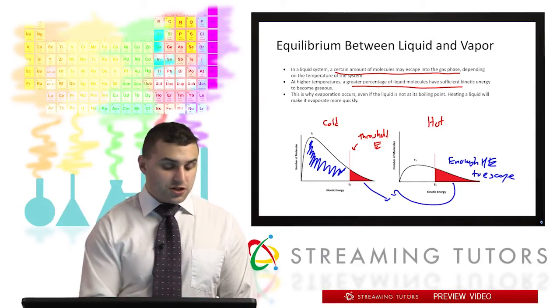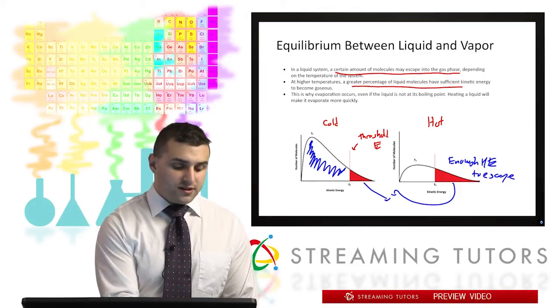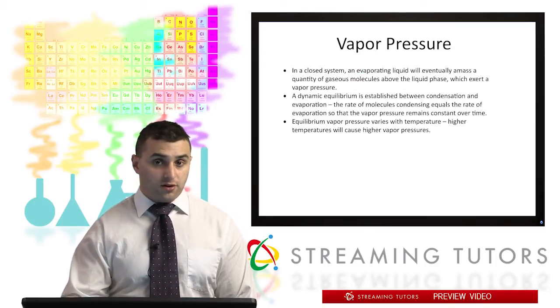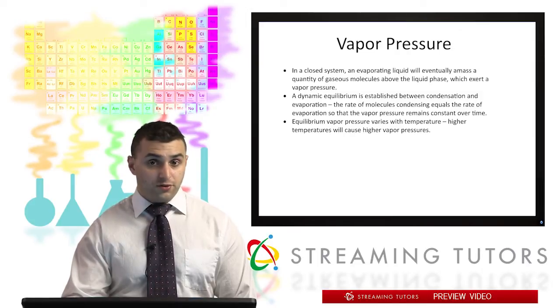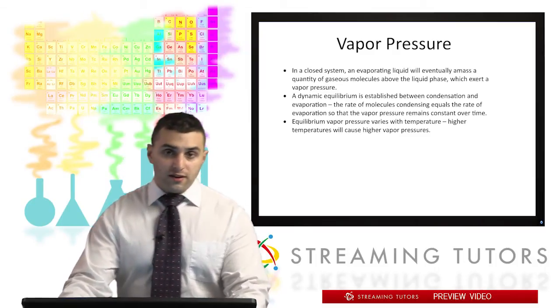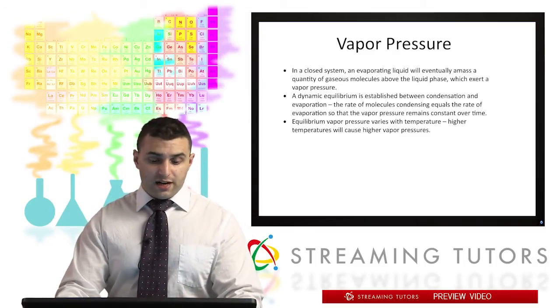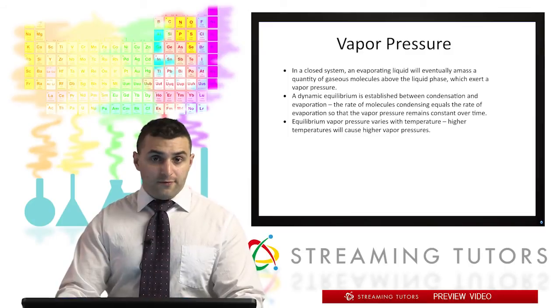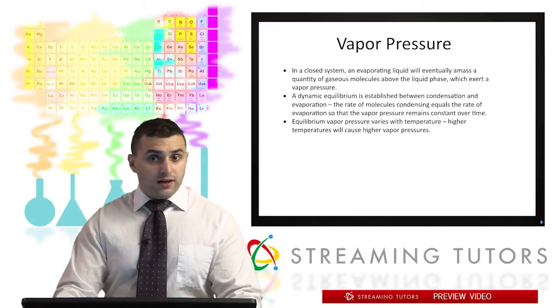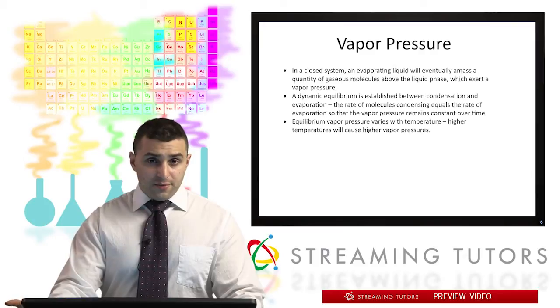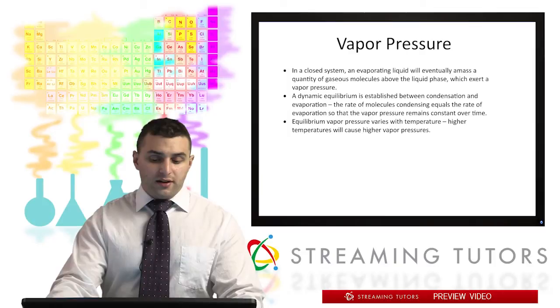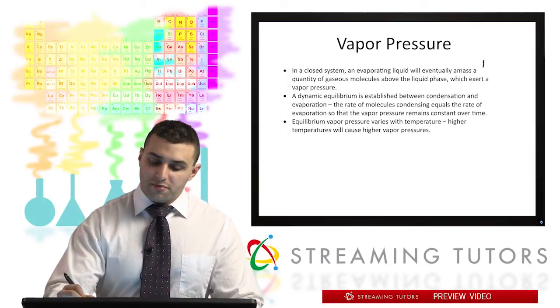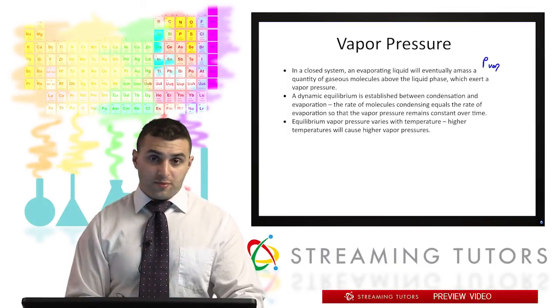And now the way we actually measure what's in the gaseous phase versus the liquid phase is through this quantity called vapor pressure. Vapor pressure is just referring to the pressure of a liquid's vapor above the actual liquid phase. So I think the easiest thing to think about is we can have a closed system. If we seal off a container of some liquid, there's going to be a certain amount of molecules that escape into the gas phase above the liquid. And that's just the vapor pressure, or they exert a vapor pressure.